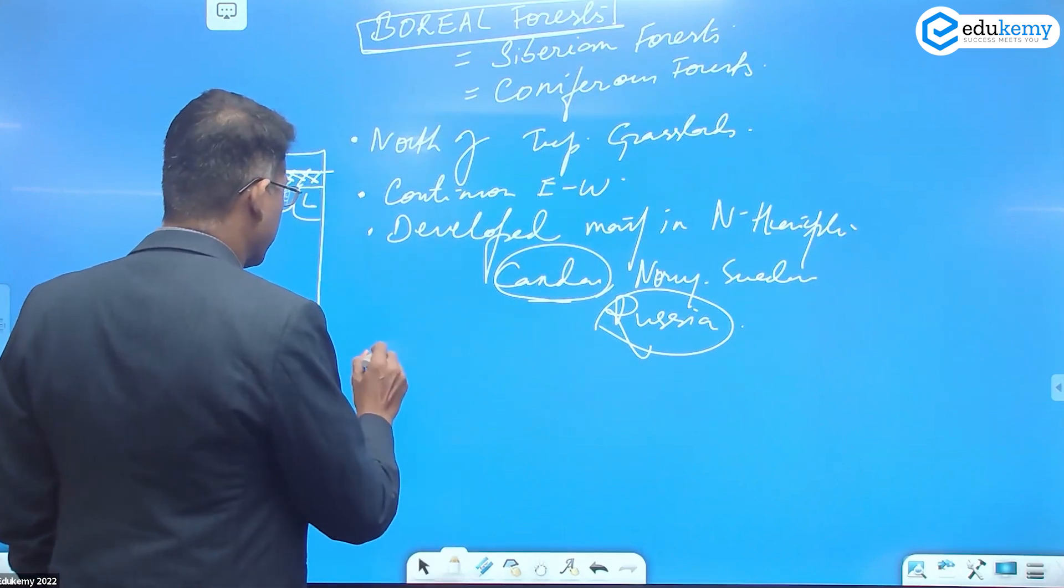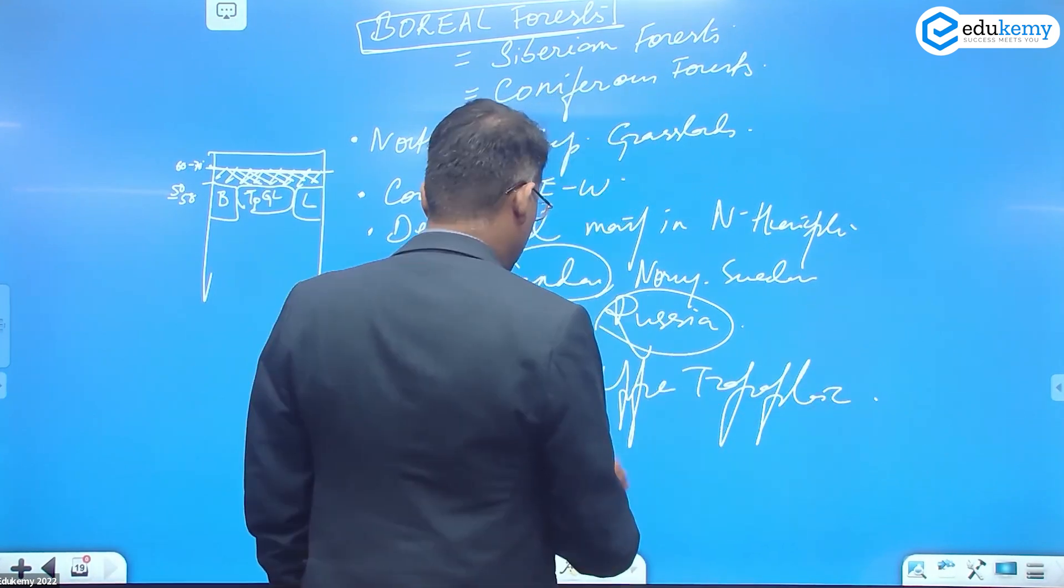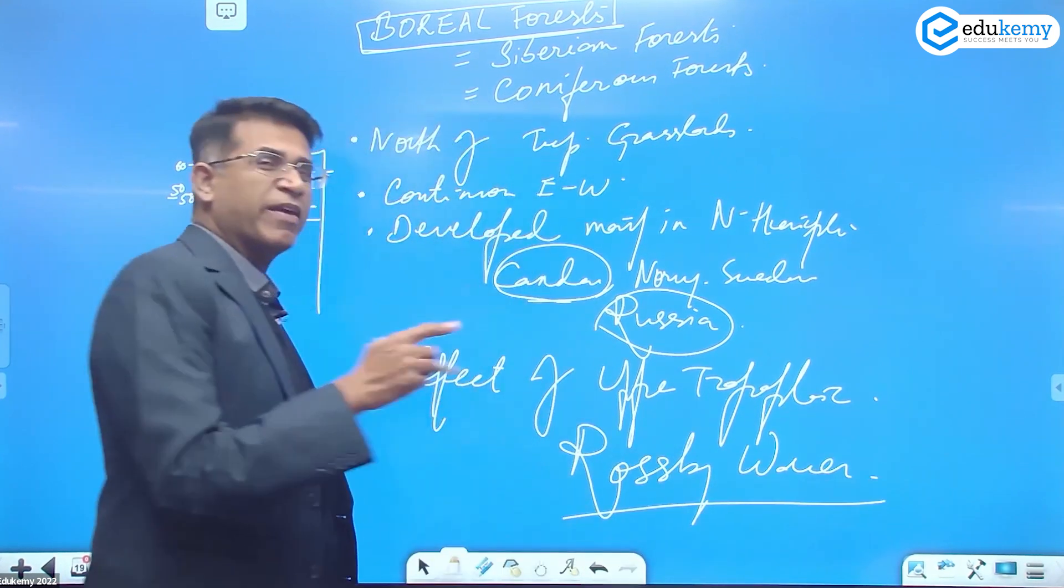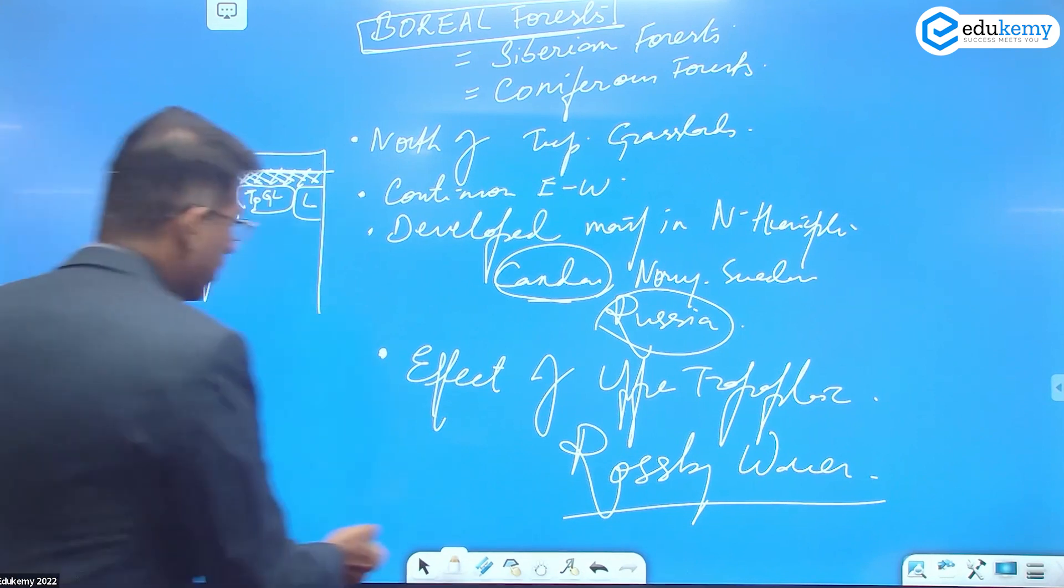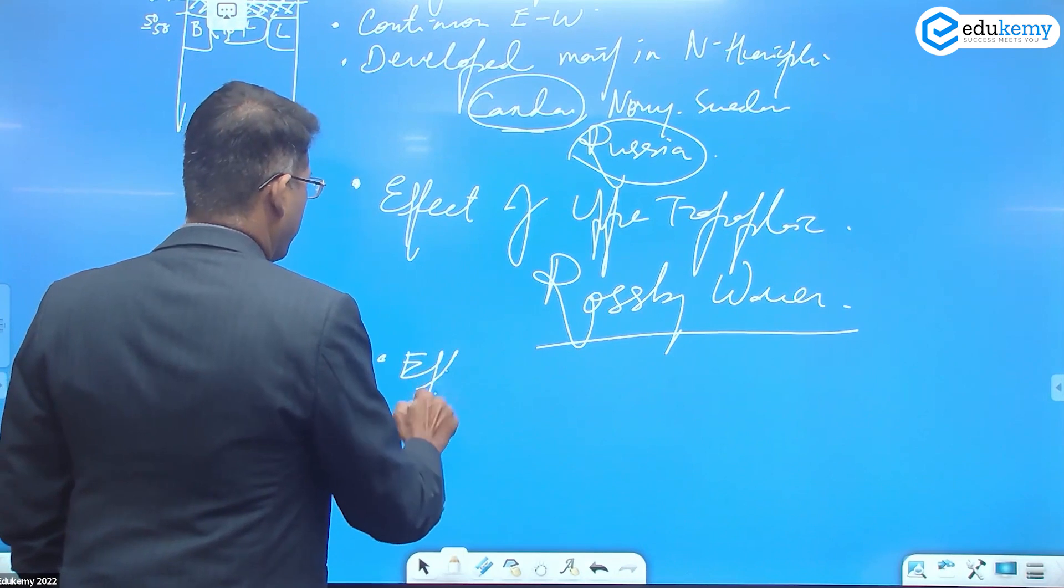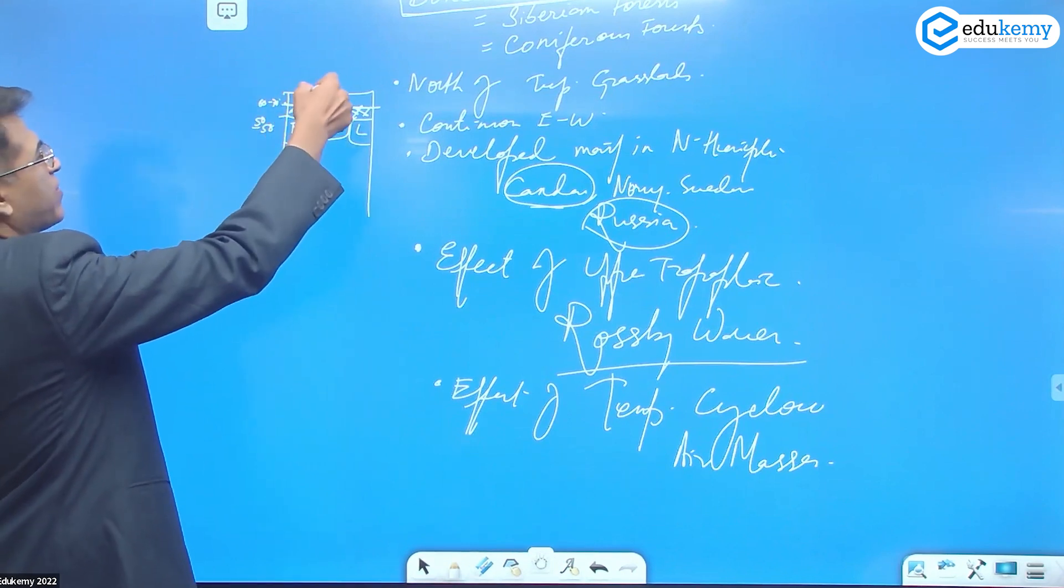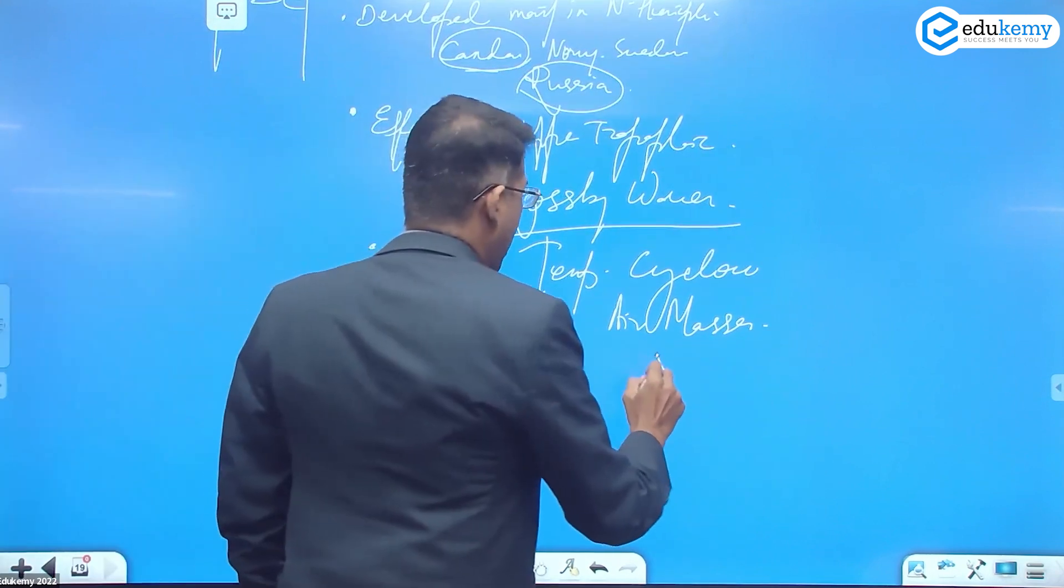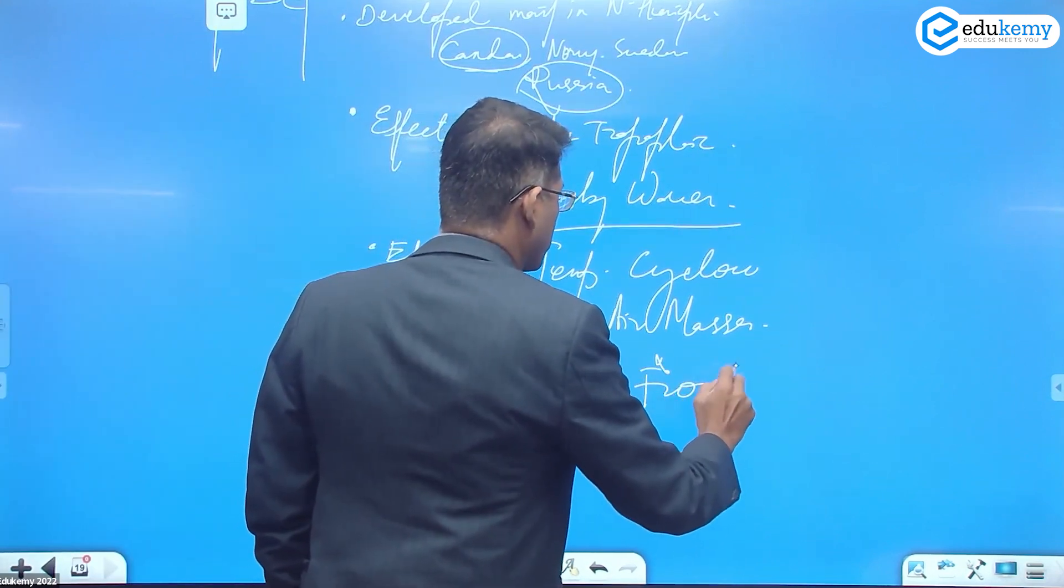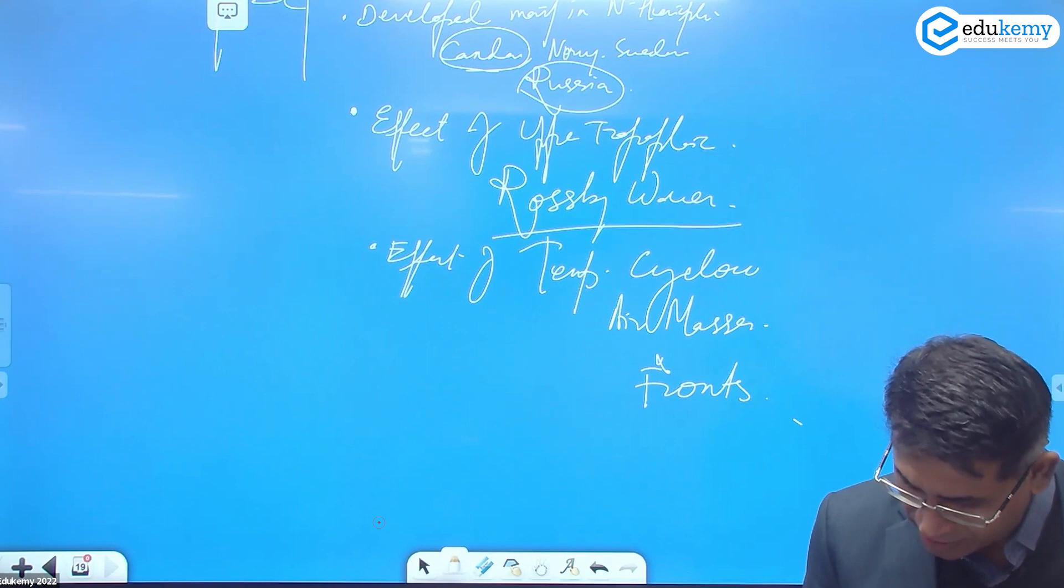If you remember a bit of your upper tropospheric circulations, you have the effect of upper tropospheric Rossby waves. The Rossby waves can create conditions for rainfall. The rains here are because of upper tropospheric conditions. You'll have the effect of temperate cyclones and air masses, so when Rossby waves are moving like this on the top they create some conditions. Air masses and fronts play an important role.